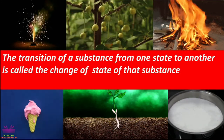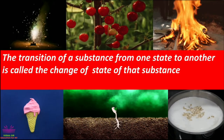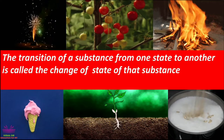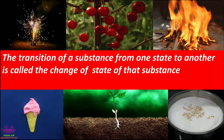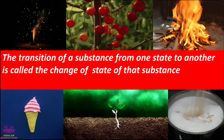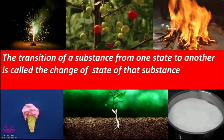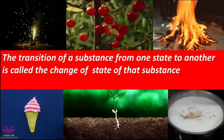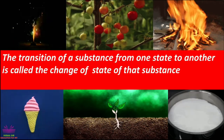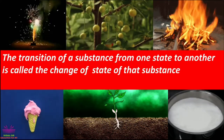Now, we have observed these changes, and many other changes continuously happen in our surroundings. Before we classify these changes, let us understand the meaning of the word change. The transition of a substance from one state to another is called the change of state of that substance. The transition means the transformation of a substance — our substance changes, transforms from one state to another state. This is called the change of state of that substance.